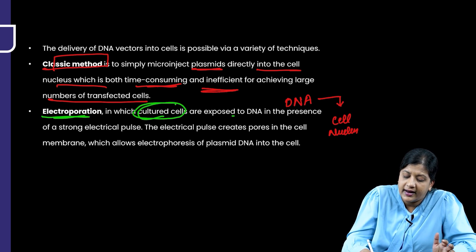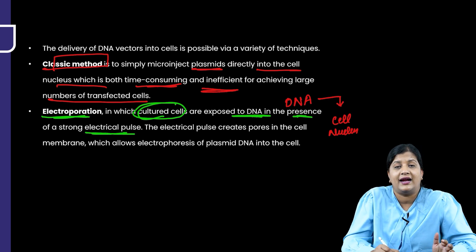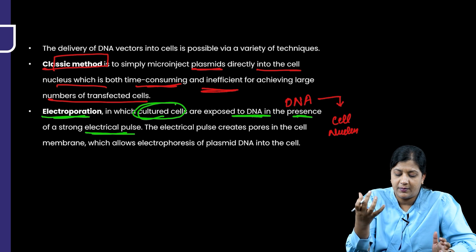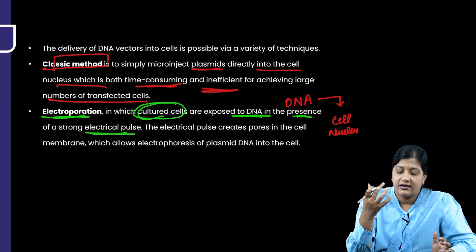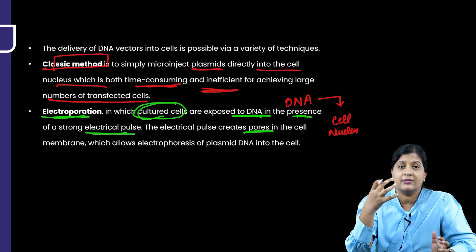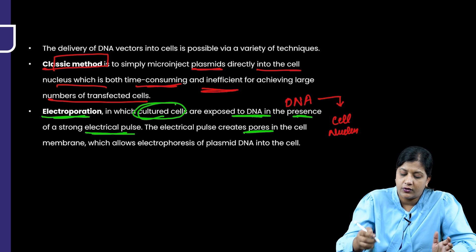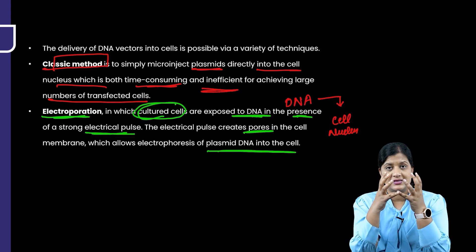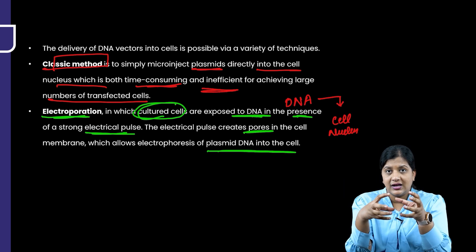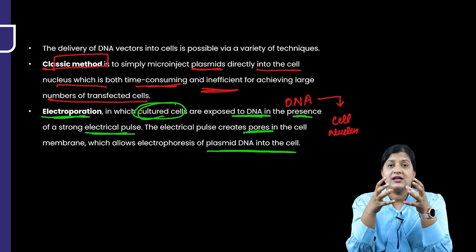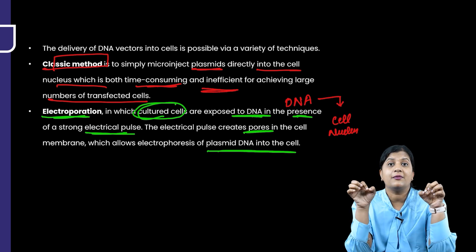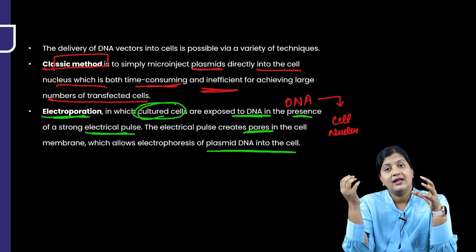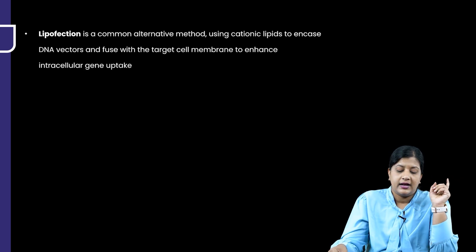Electroporation is a method in which cultured cells are exposed to DNA in the presence of a strong electric pulse. This electric pulse creates pores in the cell membrane. When electrophoresis is applied, the plasmid DNA enters through these holes in the cell membrane and gets incorporated into the cell.